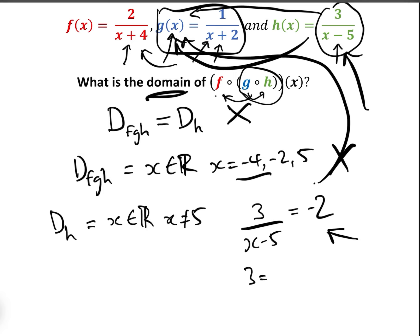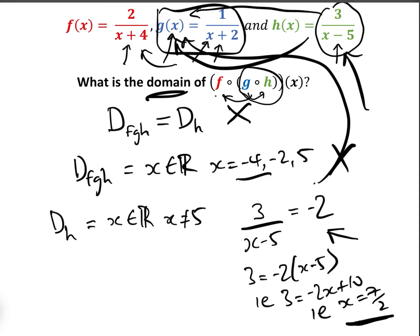Solving this: three equals minus two times (x minus five), i.e. three equals minus two x plus ten, i.e. x equals seven over two. So we can't have x equals seven over two in our domain either, because placing it into h(x) gives minus two, and placing that into g gives an infinite value.